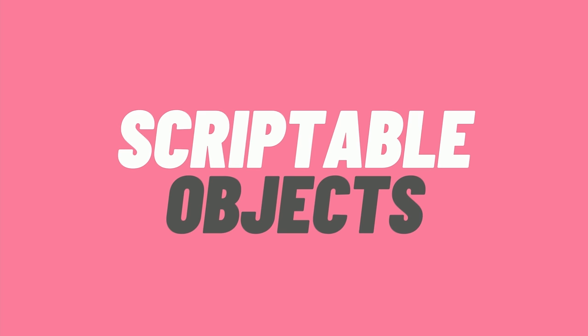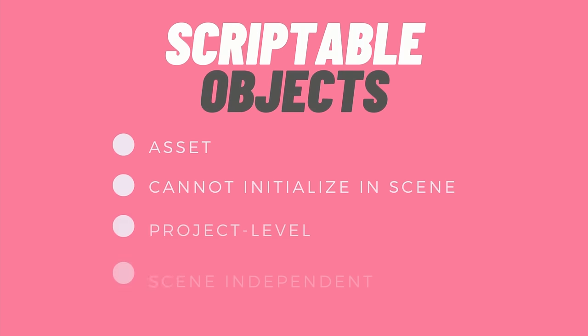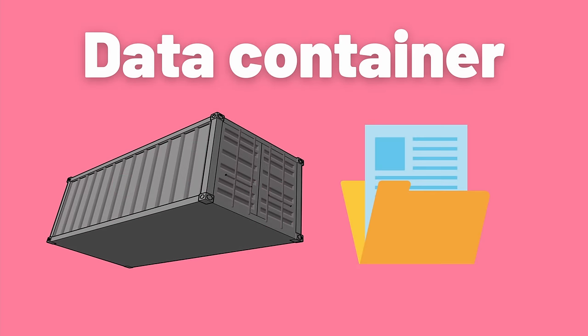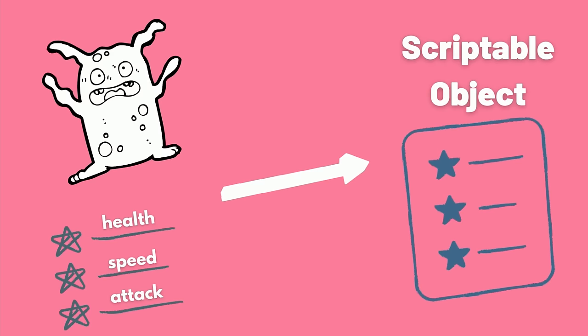Scriptable objects are data containers which live outside the scene and are also persistent, meaning that their values do not change when the scene reloads, unless you programmed that functionality. So they're a great way of storing data you may need, such as the health, enemy attack, etc. However, there is another use for them.